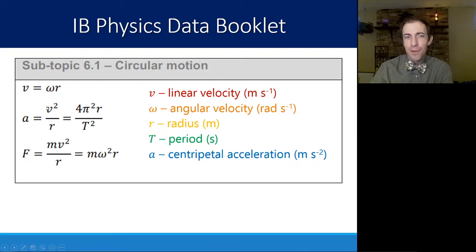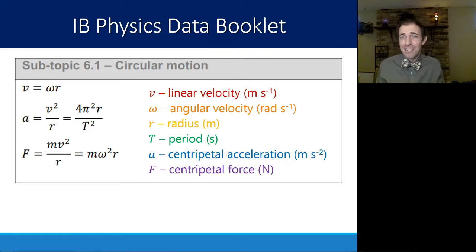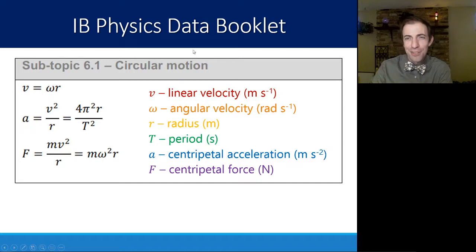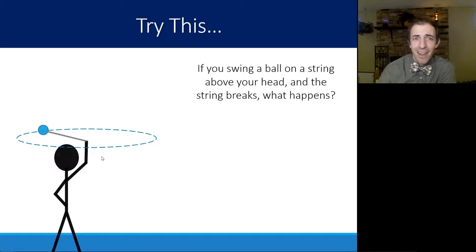A is the centripetal acceleration, and F is the centripetal force. Note that in these equations they aren't labeled with a subscript C, but they are in the circular motion section, so these equations are talking about the acceleration and force governing circular motion.